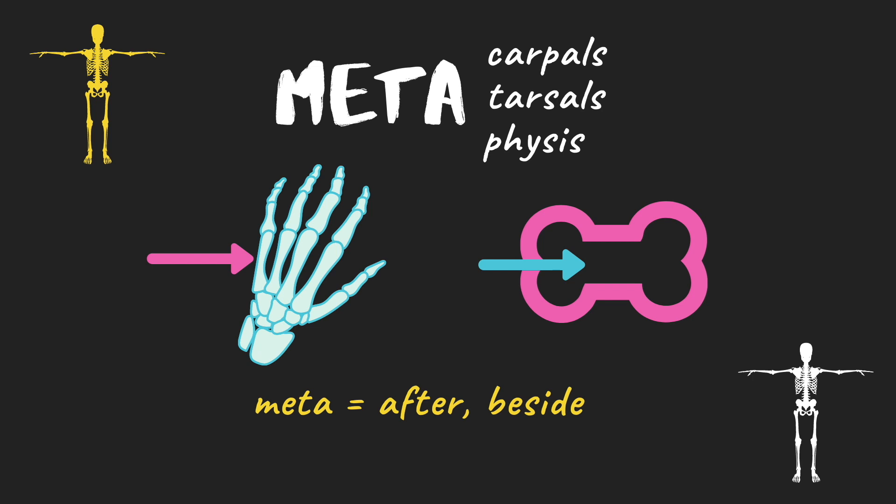We also have 'meta', which appears at the start of three words within the skeletal system: metacarpals, metatarsals, and metaphysis. Meta literally means after or beside. So the metacarpals are beside the carpals, the metatarsals are beside the tarsals, and the metaphysis is beside the epiphysis — just inside from the end of the bone.